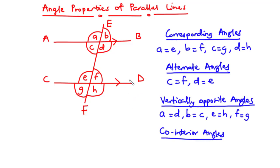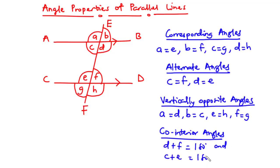Co-interior angles occur between two parallel lines crossed by an intersecting transversal, on the same side of the transversal. When line EF crosses parallel lines AB and CD, the angles on the same side of the transversal are co-interior angles. So D plus F equals 180 degrees, and C plus E also equals 180 degrees. D and F are supplementary angles, and C and E are also supplementary angles, because they add up to 180 degrees.